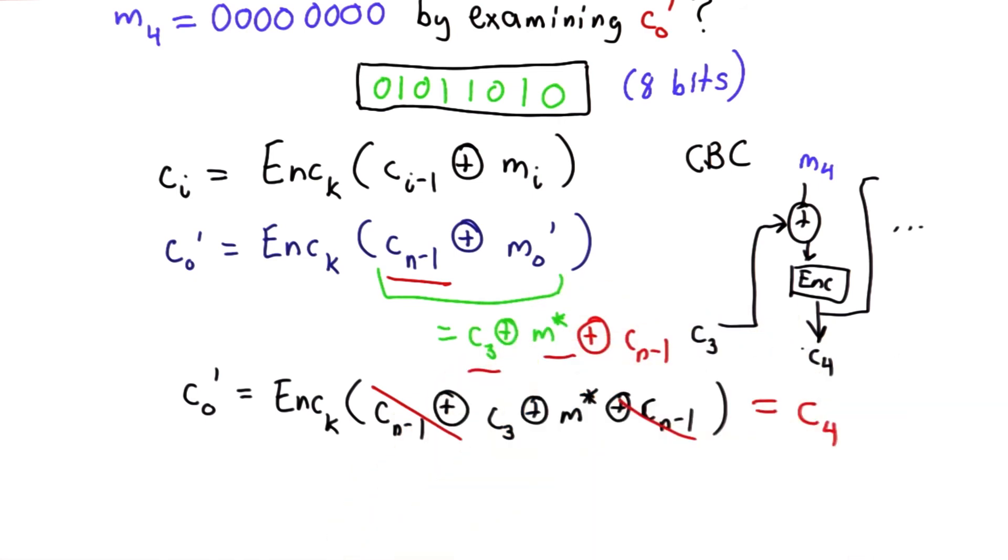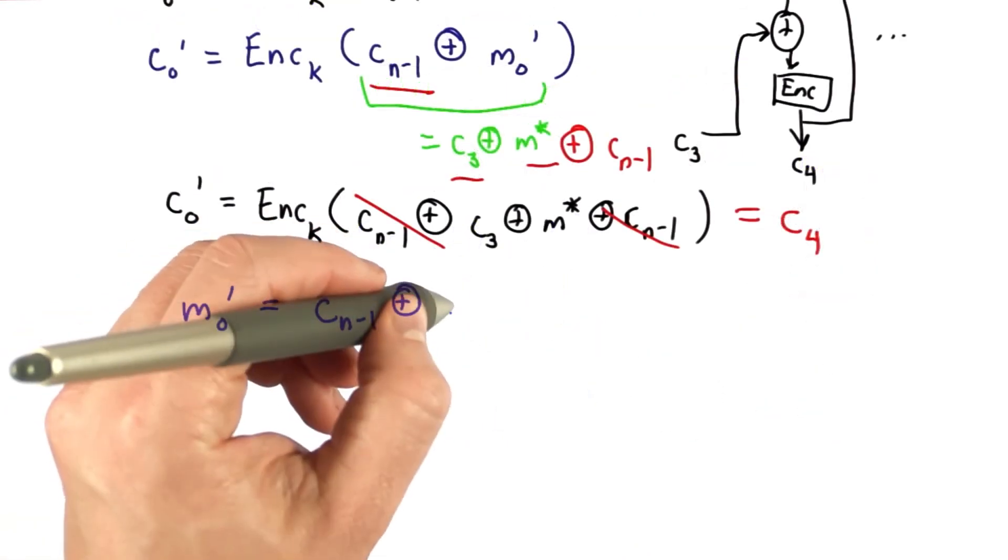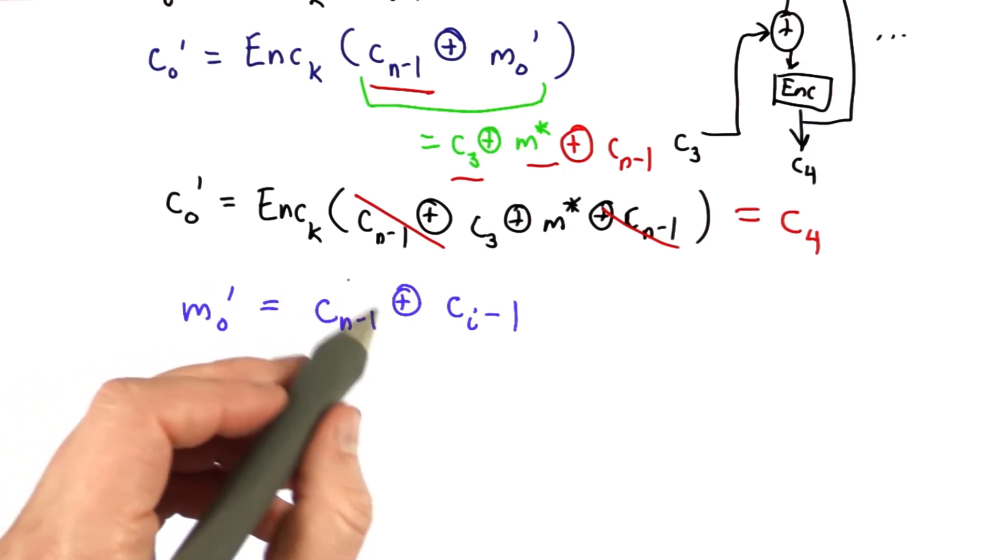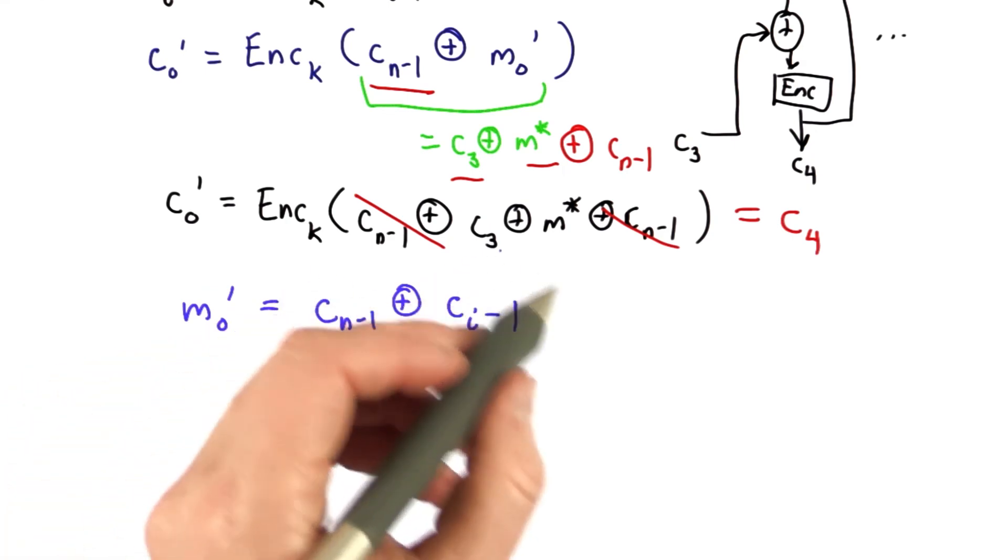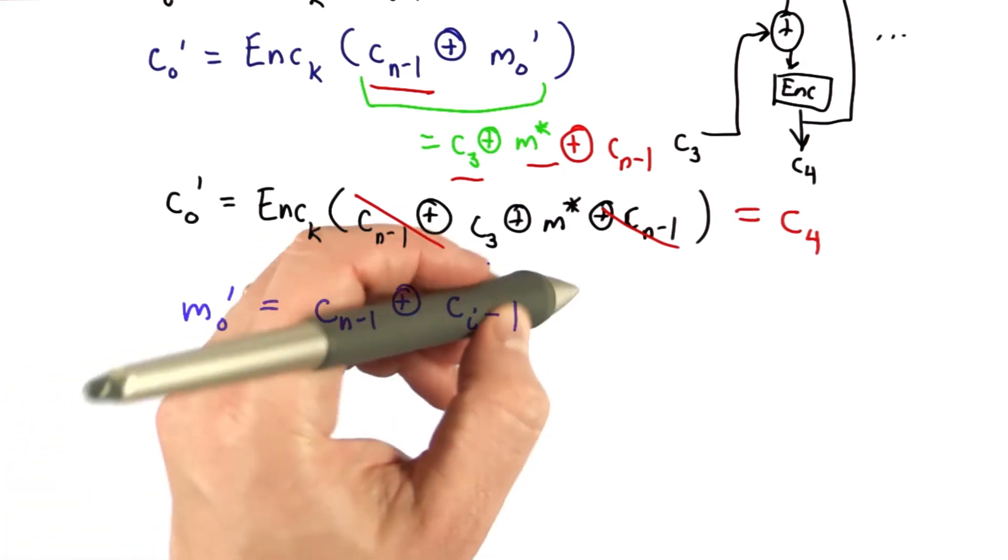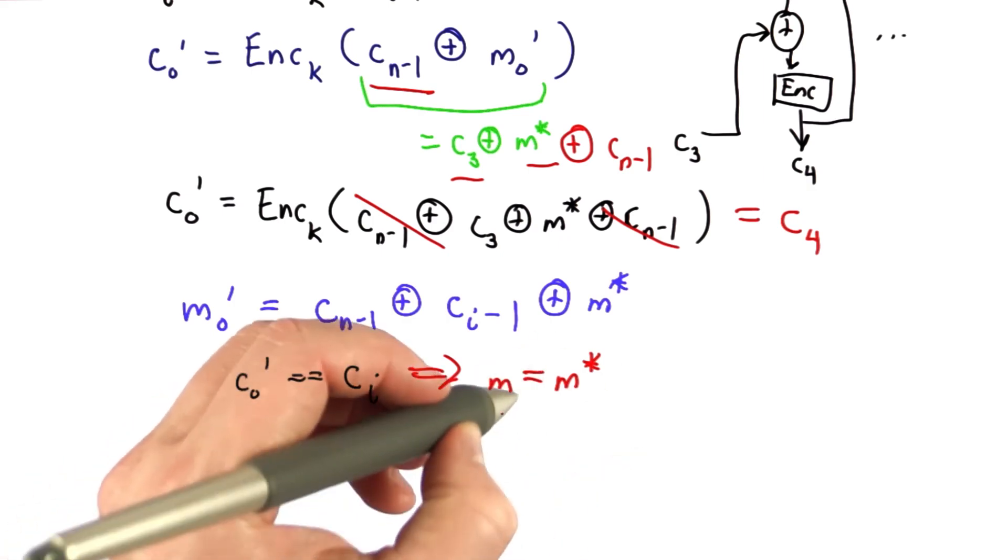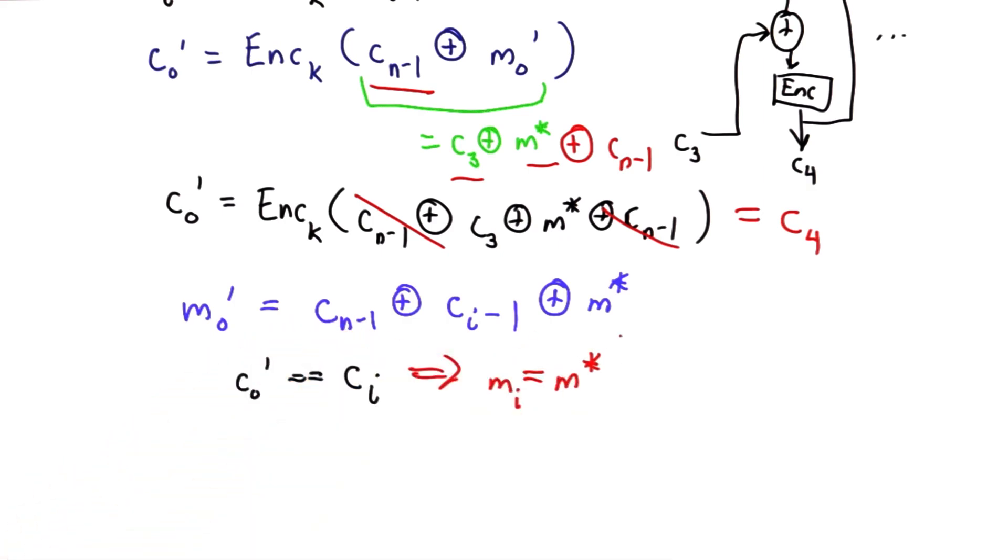And that would give us the answer to the question, was m4 equal to m star? And of course, we can generalize this. If we can pick the value of m0 prime to be the xor of the last ciphertext block, and the one before the one we want to guess, and our guess, that means what we learn if the ciphertext block that results from the new message is equal to ciphertext block i, then we know that block mi is equal to m star.